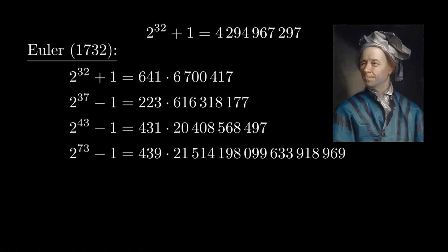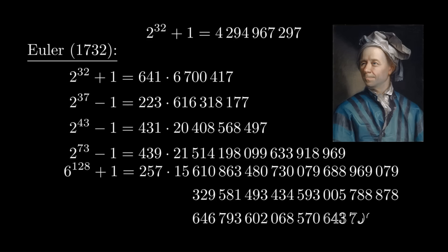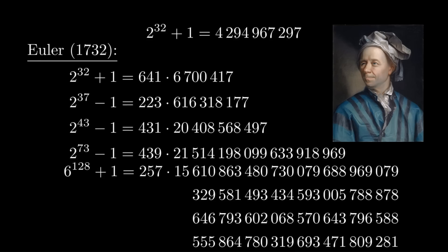And he handled one even bigger number, which was 6^128 + 1, which is a 100-digit number. And he found that 257 is a factor of that. And, needless to say, the other factor is ridiculously big. Too big to really even bother computing, even if you wanted to.